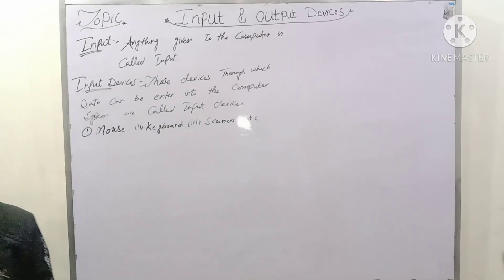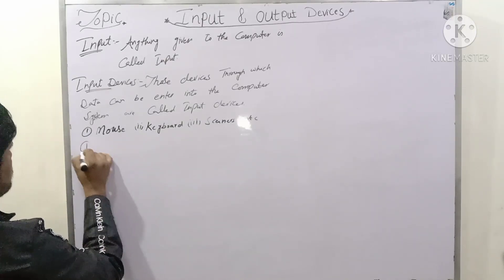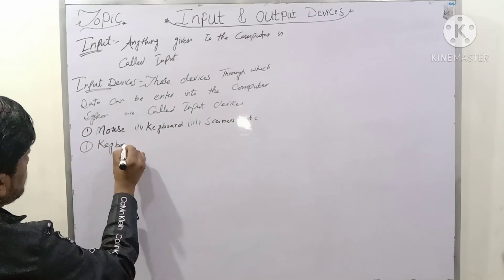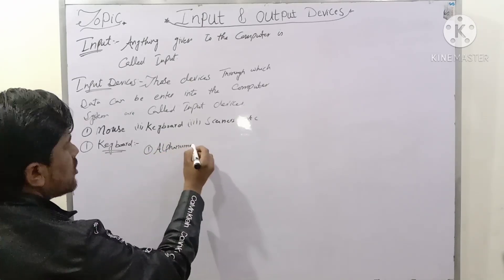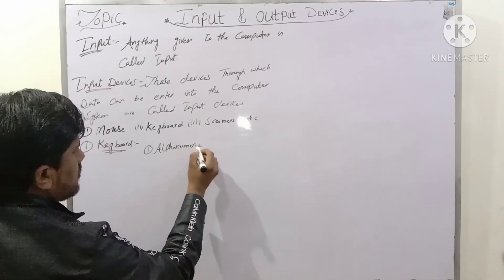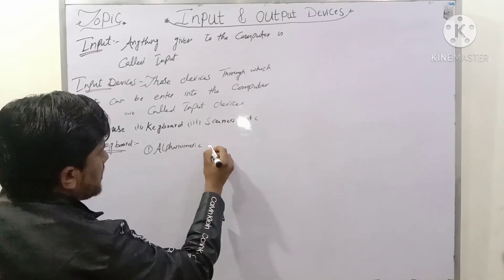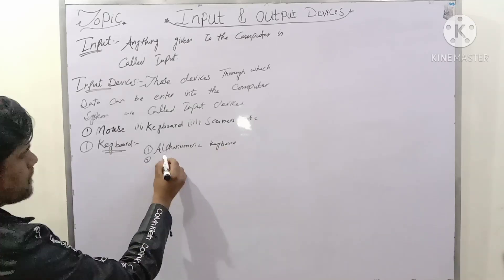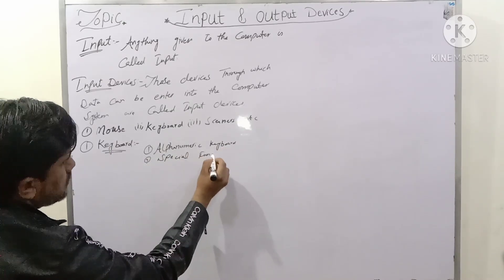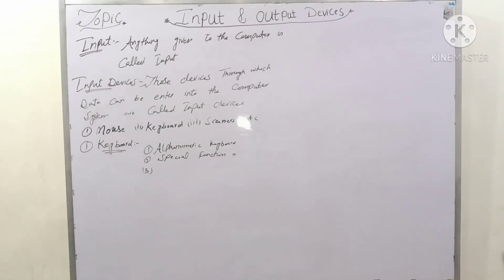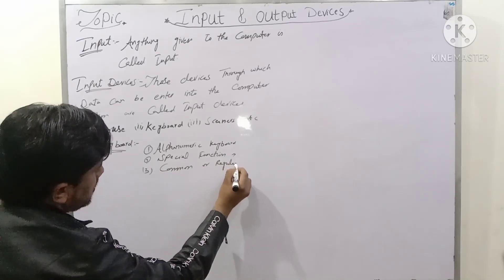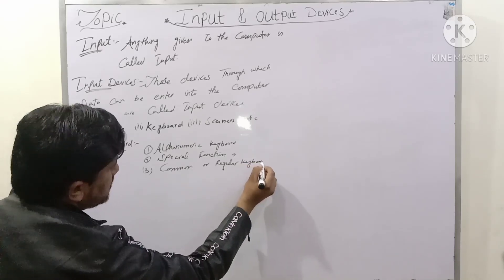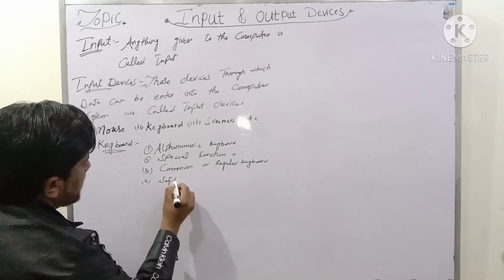Firstly, we will discuss the keyboard in detail. Through the keyboard, we can enter data using keys. Types of keyboards: alphanumeric keyboard, special function keyboard, common or regular keyboard, and soft touch keyboard. These are the types of keyboards.